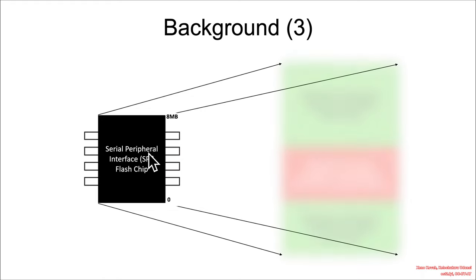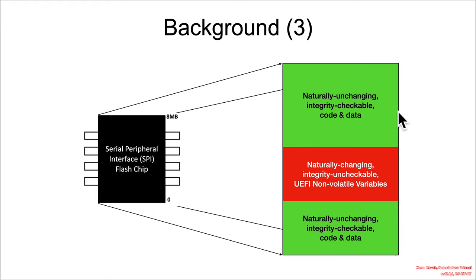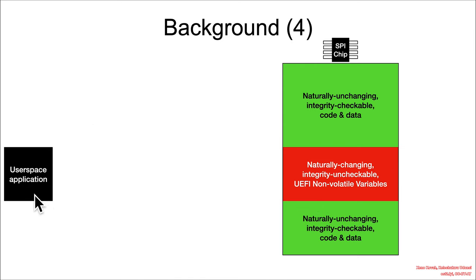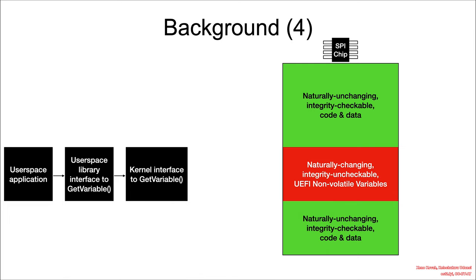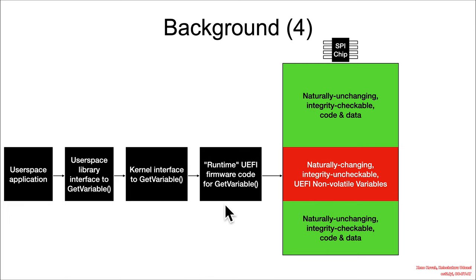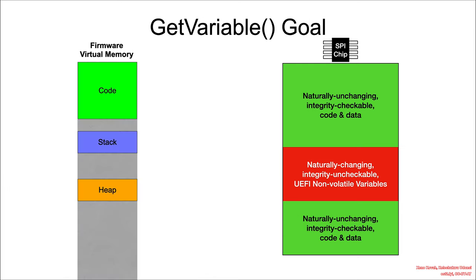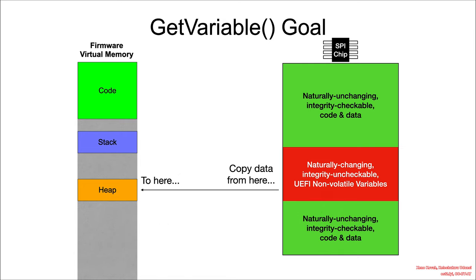For instance, if we had an 8MB Flash Chip, it's typically going to be composed of some amount of UEFI code and data that is integrity-checkable and unchanging, but there's always going to be some region storing those NVVars. Generally, if a user space application wants to read and write the NVVars, the operating system may or may not allow it, but if it does, you're typically going to have a user space library interface to get variable, followed by a kernel interface, and then you may have some runtime code that was left around and reused by the kernel — because it knows how these NVVars are actually structured and formatted, since formatting can vary depending on the system. The ultimate goal of a function like get variable available at runtime is to copy things from the non-volatile memory into runtime memory like the heap for usage by the firmware.